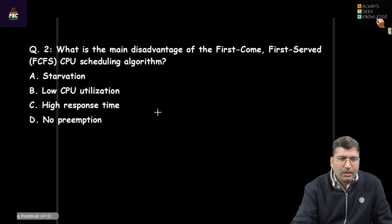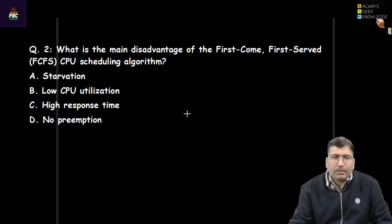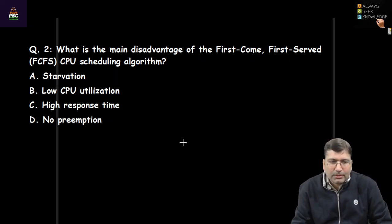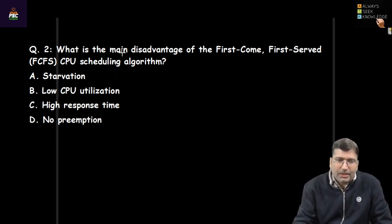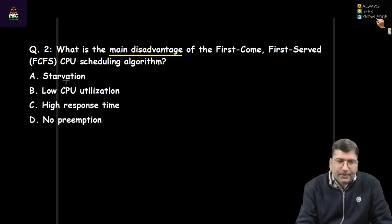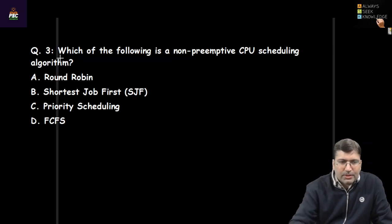Let's solve a quick question: what is the main disadvantage of FCFS CPU scheduling? The options are starvation, low CPU utilization, high response time, and no preemption. All are disadvantages, but the most prominent one is starvation — it is the main disadvantage that should not be present in the system. The answer is A.